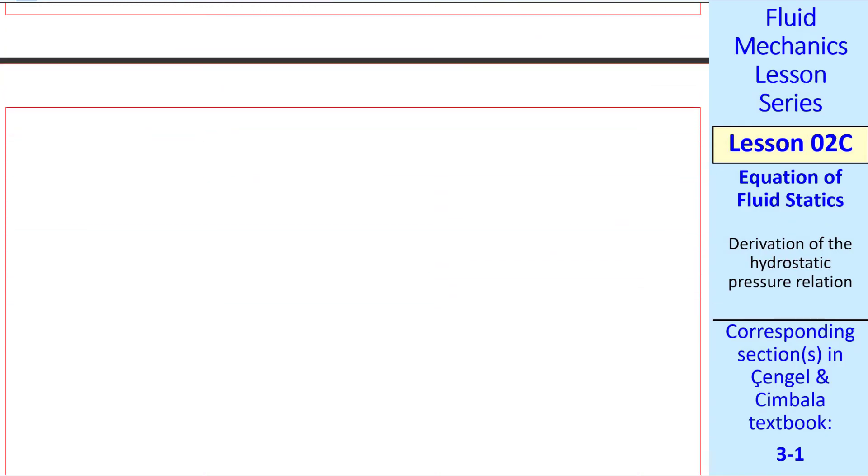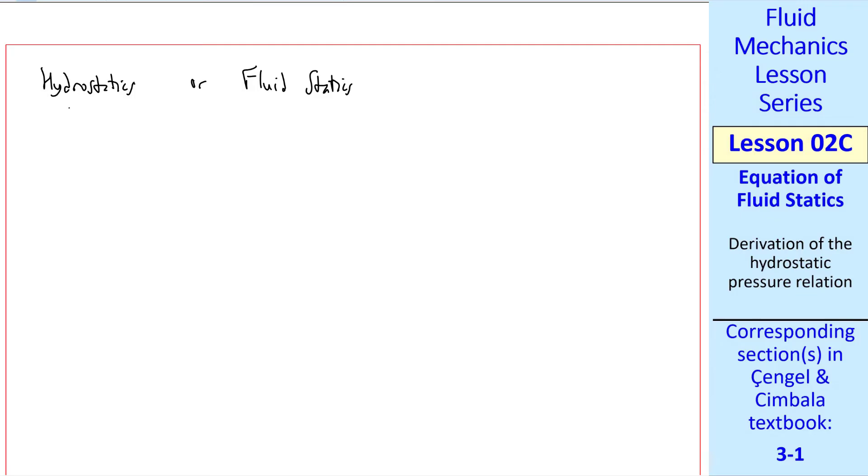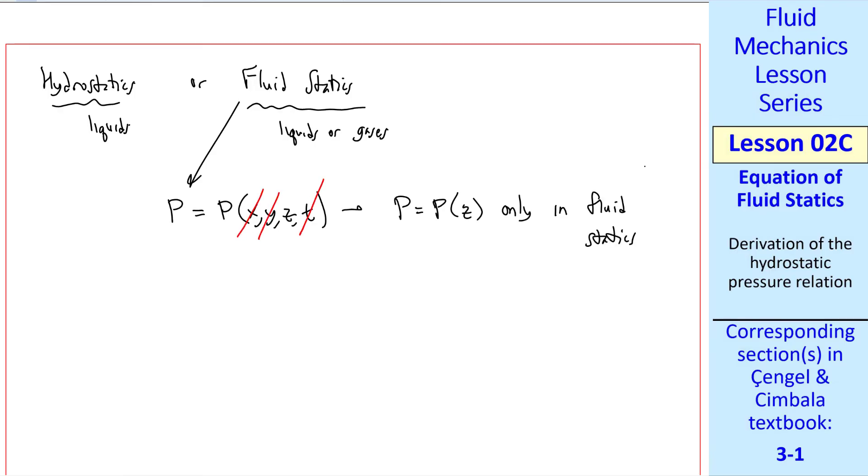So kind of a summary in hydrostatics. By the way, hydrostatics typically refers to liquids, whereas the more general fluid statics refers to liquids or gases. So for fluid statics, remember p is normally a function of x, y, z, and t. But if this is fluid at rest, nothing's changing with time. We just showed that p is not a function of x or y. So p is a function of z only in fluid statics.